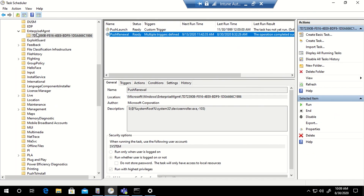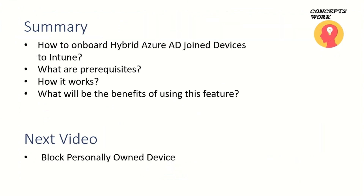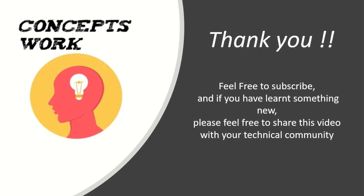That covers the theoretical and practical parts of using this particular feature, and knowing whether your enterprise requires it. To summarize: we discussed the process to get hybrid Azure AD joined devices onboarded to Intune, the prerequisites, how the feature works, and the benefits. In the next video, I'm going to talk about blocking personally owned devices using serial key hash pushed into Intune. If this channel is helping you learn, please subscribe and share this video with your technical community. Thank you so much!